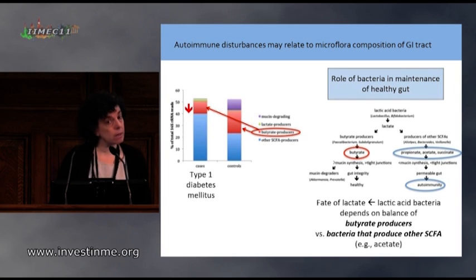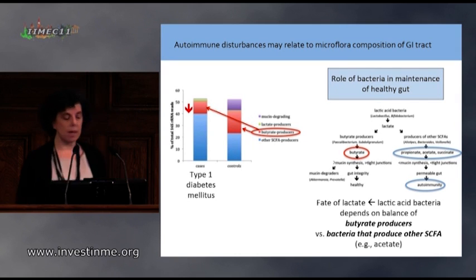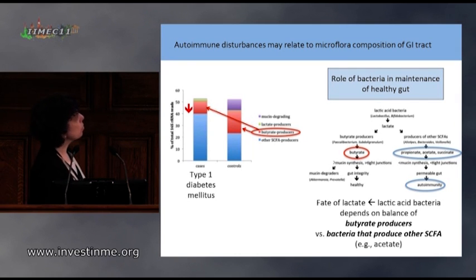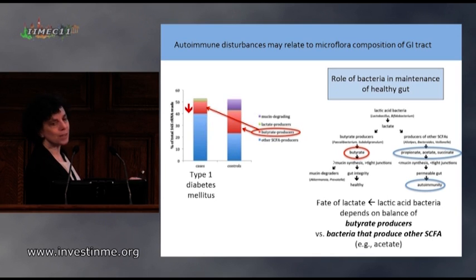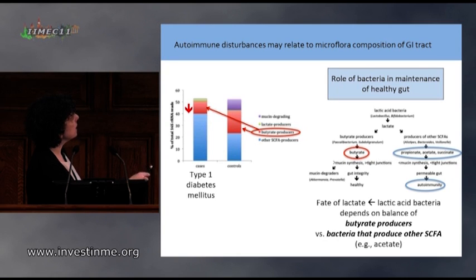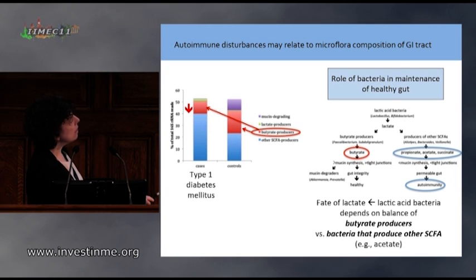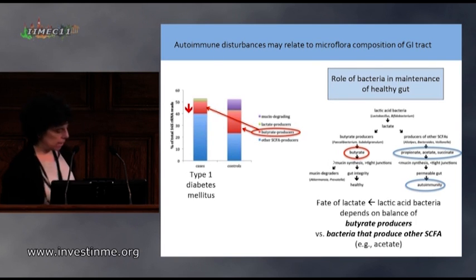One of the key products of bacteria showing themselves to be quite interesting are the short-chain fatty acids. Butyrate-producing bacteria, when they produce more butyrate as in a healthy control individual, are typically protective against disorders like type 1 diabetes where you have lower levels of butyrate. In contrast, other short-chain fatty acids — propionate, acetate, and succinate — are more likely to lead to autoimmunity.